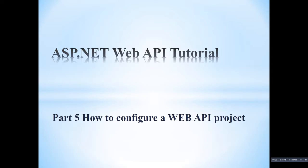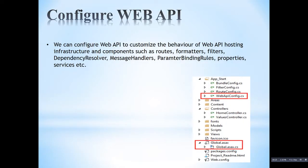Hello, this is an ASP.NET Web API tutorial, Part 5. In this tutorial I am going to explain how to configure a Web API project, what is the starting point of a Web API project, and where to configure the Web API config properties. After creating a Web API project, these are the folders you will see in the Solution Explorer.